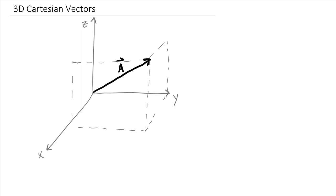Continuing down here intersecting with the x-axis, back here to the z, and over there connecting the other side — this gives me a full cube, and we can see how this vector sits in space. It turns out that vector A has positive x, positive y, and positive z components as drawn.